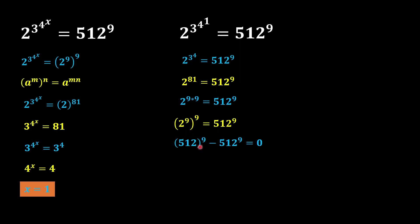Since 2^9 = 512, and the overall power of 9 remains, we have 512^9 on the left side. Moving 512^9 to the other side gives minus 512^9, and both values cancel out, giving 0 = 0. This confirms that x = 1 satisfies the equation. I hope this video was useful. If you liked it, please hit the like button and subscribe to our channel. Thank you.